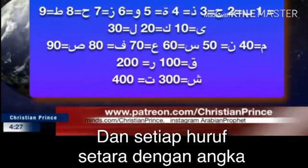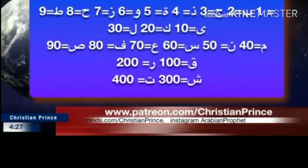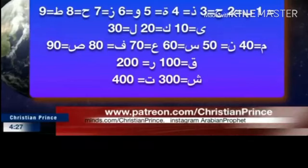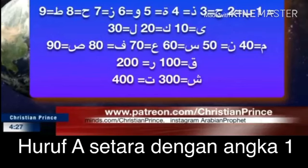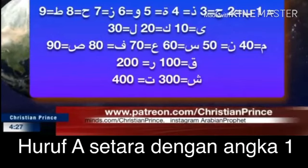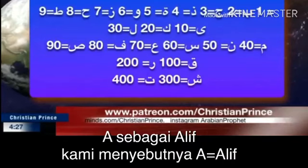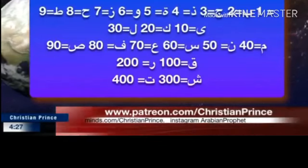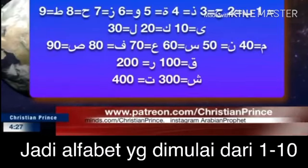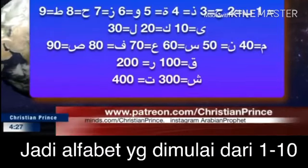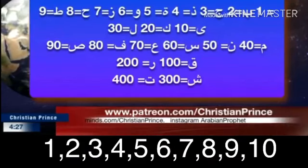Every letter is equal to a number. This is taken from the Aramaic — this is not something about Arabic, this is an Aramaic thing. So every letter has an equal number. Letter A, which we call Alif, is equal to 1. Letter B is equal to 2. The alphabet goes from 1 to 10.